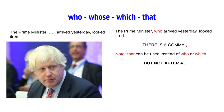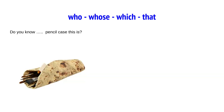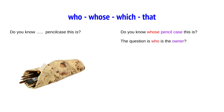We've done who, which, and that. Now we go to whose. Very nice pencil case — I would like to have this one. Do you know whose pencil case this is? Whose in Dutch is van wie — it means who is the owner. When you talk about an owner, you use whose.